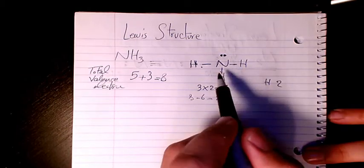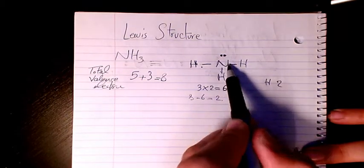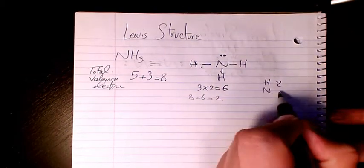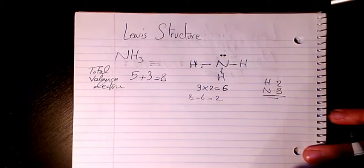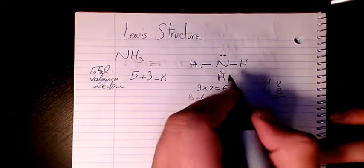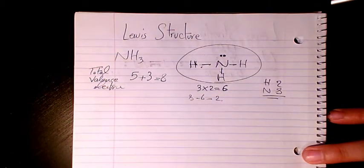What about for nitrogen? We have one, two, three, four, five, six, seven, eight. So nitrogen has eight, so the octet rule is valid for nitrogen as well. That's the Lewis structure of ammonia.